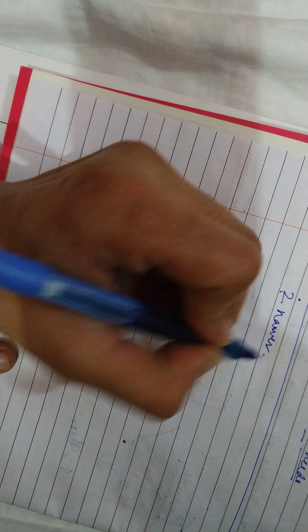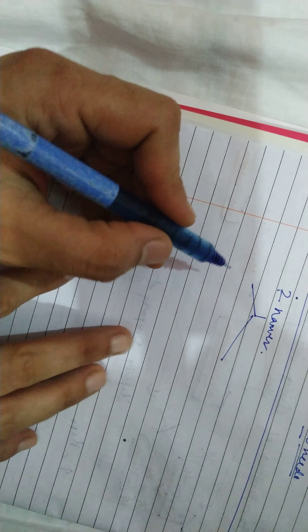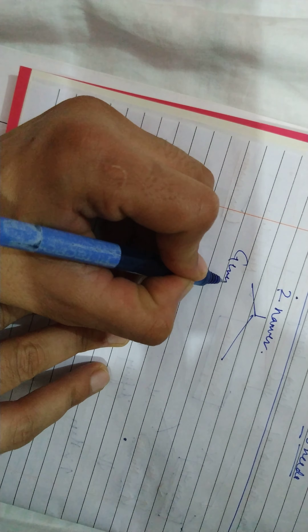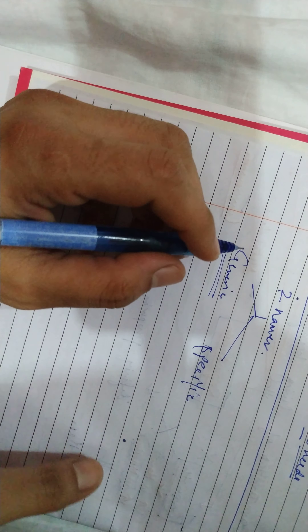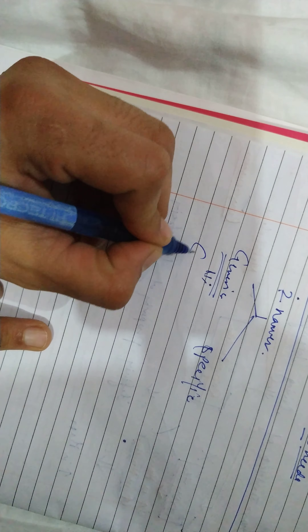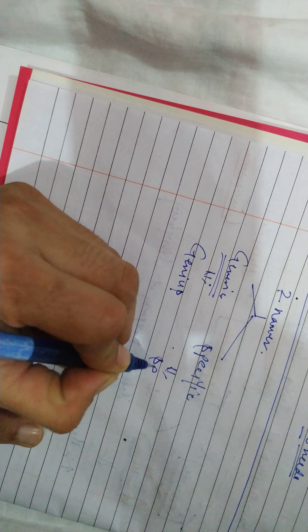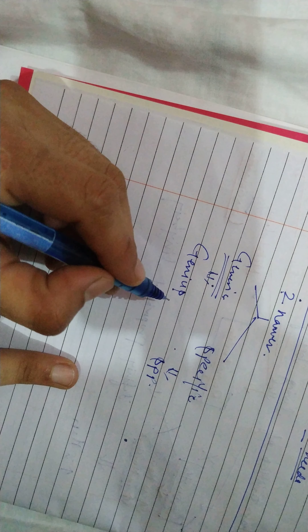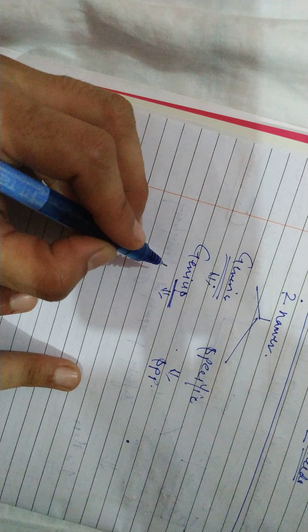The two names in binomial nomenclature are the generic name and the specific name. The generic name is also known as the genus name, and the specific name is also known as the species name. There are specific rules which are supposed to be followed when writing binomial nomenclature.